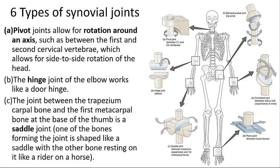A hinge joint has a cylindrical projection of a bone that fits into a trough-shaped surface on another bone — the elbow and knee joints are examples. A saddle joint has an articulating surface with a concave area that fits with a convex area of another bone — the first carpometacarpal joint of the thumb is an example.